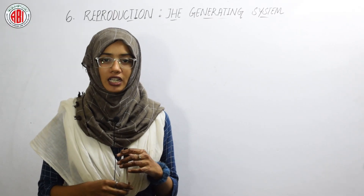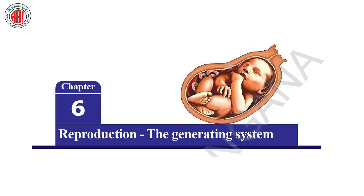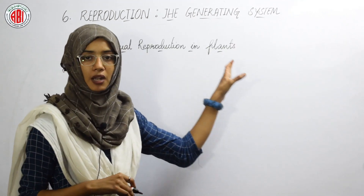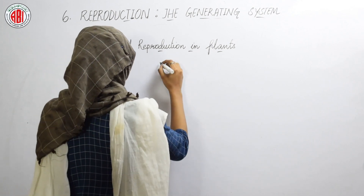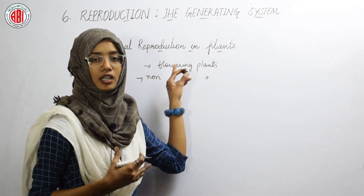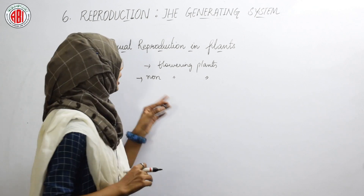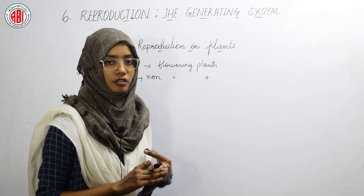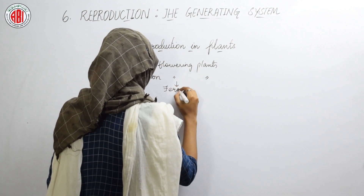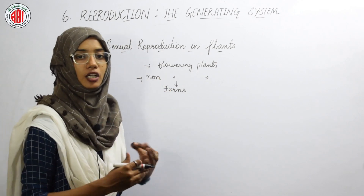Good afternoon everyone, welcome back to my class. In the previous class I explained about the asexual modes of reproduction, and today we are going to discuss sexual reproduction in plants. Plants are of two types: flowering plants and non-flowering plants. Flowering plants bear flowers, which are the reproductive part of the plant. Non-flowering plants do not produce flowers; these are called ferns.